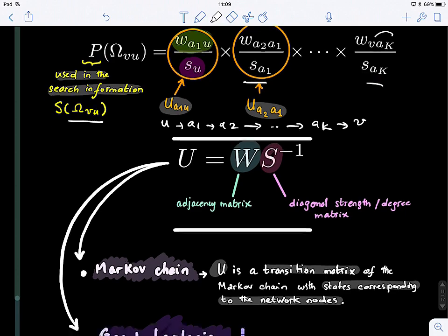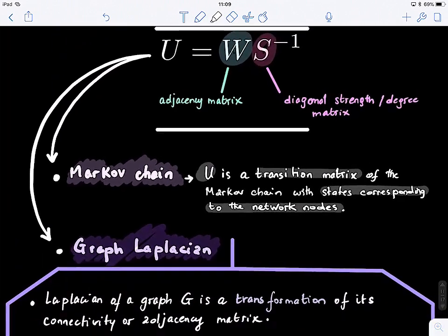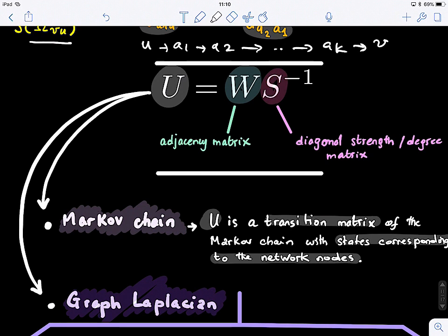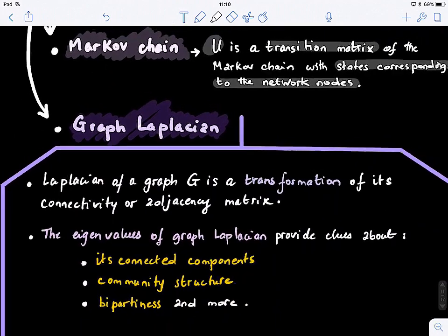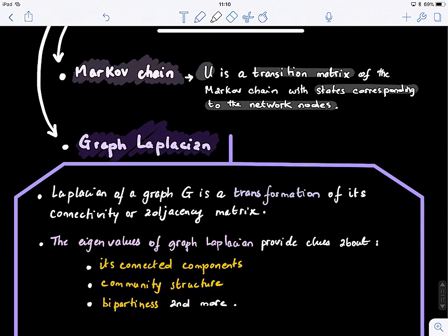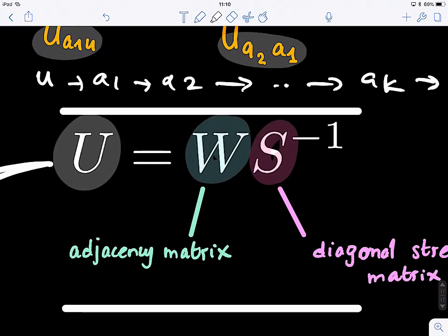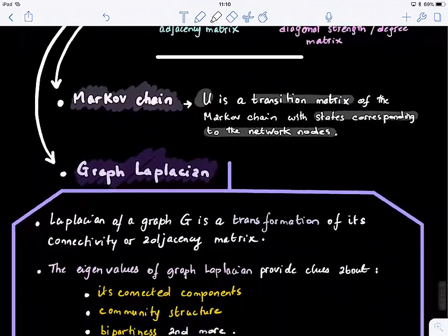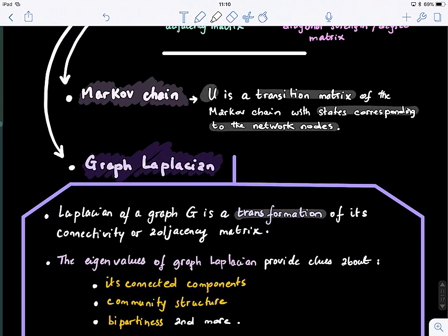Today we will look at the second concept: the Laplacian. This matrix U is connected to the Laplacian of a graph, which I covered briefly before — today I'll go slightly deeper, because the Laplacian is used in different theories. It's used in eigen-decomposition to explore the structure and topology of a graph. The Laplacian of a graph G is a transformation of its connectivity or adjacency matrix.